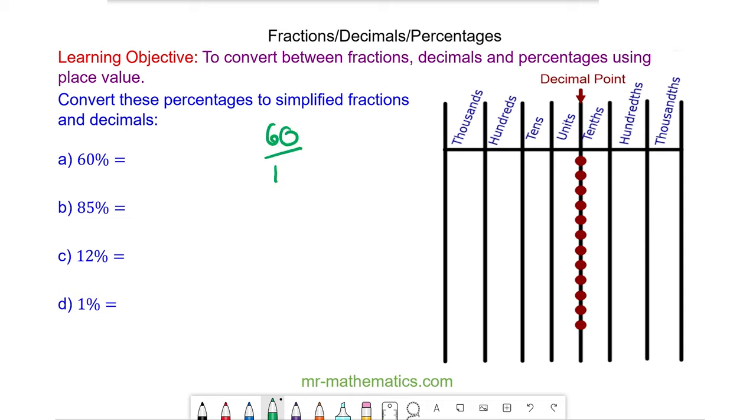We know percentage means a fraction of 100. So we have 60/100, which is 60 hundredths and no units. So we know as a decimal it is 0.6. And we can simplify this fraction by dividing both by 10, because 10 is a factor of 60 and 100. So we have 6/10, and we can simplify it further by dividing both by 2, so we have 3/5.